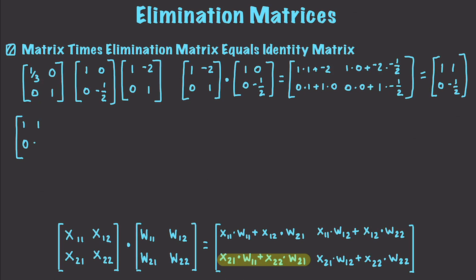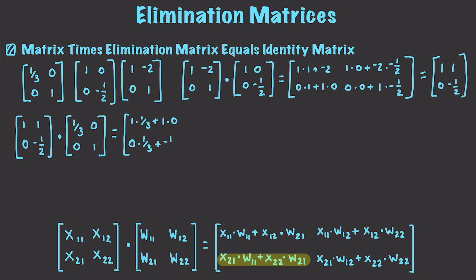Now I take that new matrix [1, 1; 0, -1/2] and multiply it by the last remaining matrix [1/3, 0; 0, 1]. The calculations are: 1×(1/3) + 1×0, 0×(1/3) + (-1/2)×0, 1×0 + 1×1, and 0×0 + (-1/2)×1. This gives us our elimination matrix: [1/3, 1; 0, -1/2].